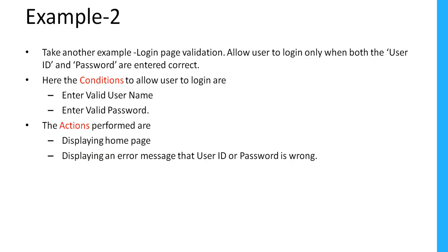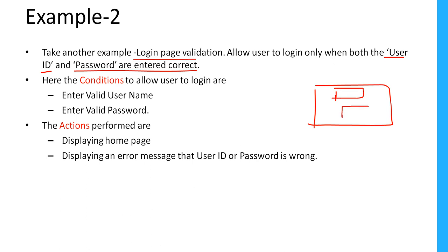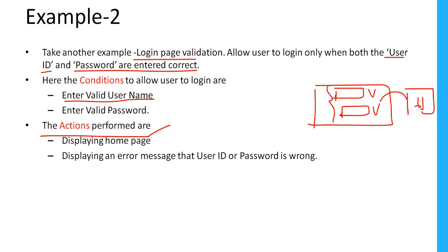Now let's take another example: login page validation. The rule is to allow a user to login only when both username and password are entered correctly. If both are valid the user should go to the home page; in all other cases an error should be shown. The conditions are: enter a valid user ID and enter a valid password. The actions are: display the home page, or display an error message that the user ID or password is wrong.